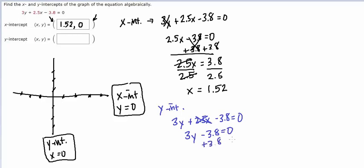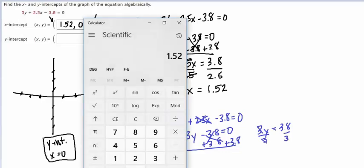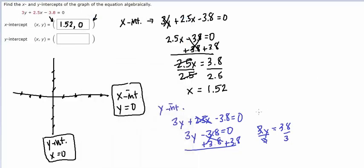We add 3.8 to both sides, and we get 3y equals 3.8. So we divide both sides by 3, and this time we'll get 1.2667. We'll call that 1.27.